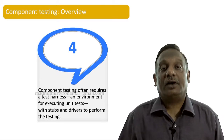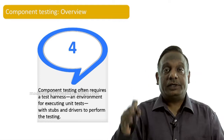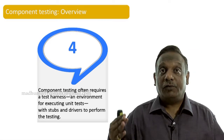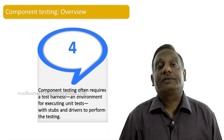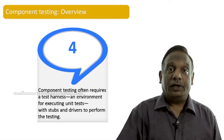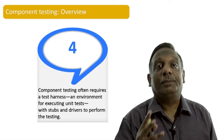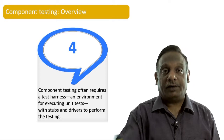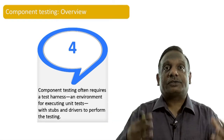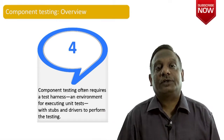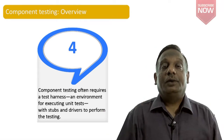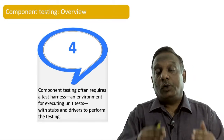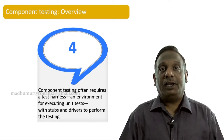Frameworks like JUnit and NUnit are widely referred to as xUnit frameworks. These frameworks are nothing but an environment for executing unit tests. To do that, we sometimes use a set of dummy programs called stubs and drivers, which we will learn about shortly. A collection of stubs and drivers together with an environment for execution of tests is what we call a test harness.